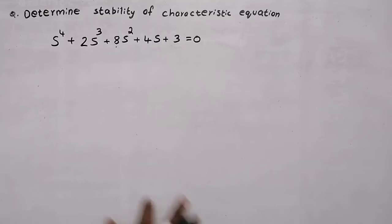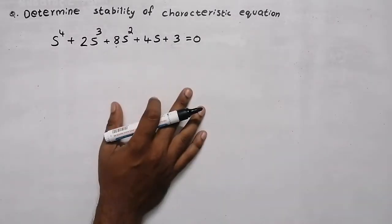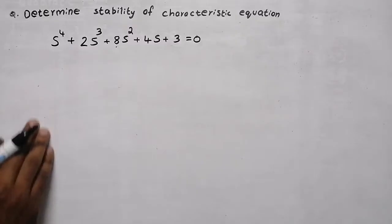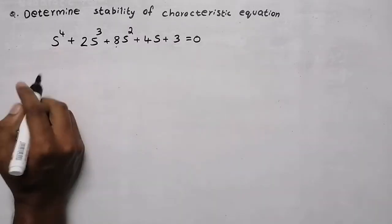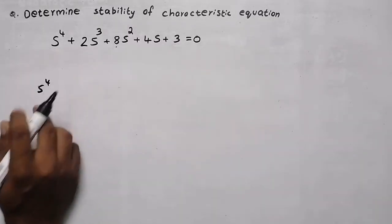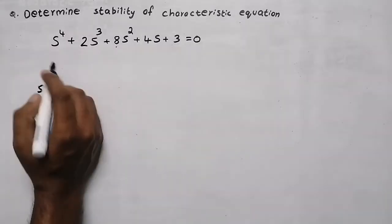We need to determine the stability of this characteristic equation. First of all, write a column with the first element — it is s raised to 4 — then the powers of s.